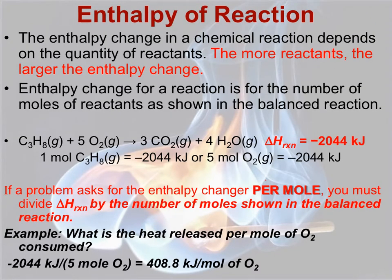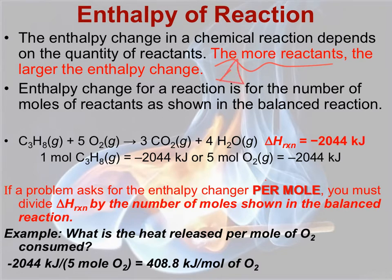Enthalpy is what we call an extrinsic property, which you may remember from our first chapter. It simply means that it depends on how much of something you have. And so the more reactants we have in a chemical reaction, the larger the delta H your enthalpy change will be.